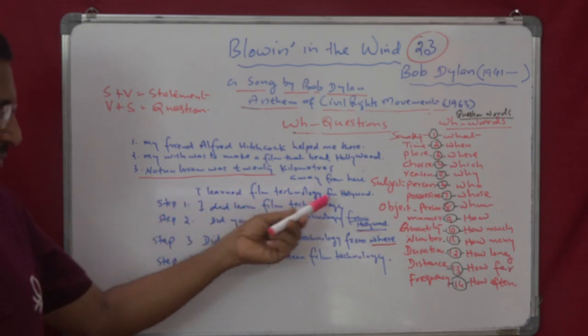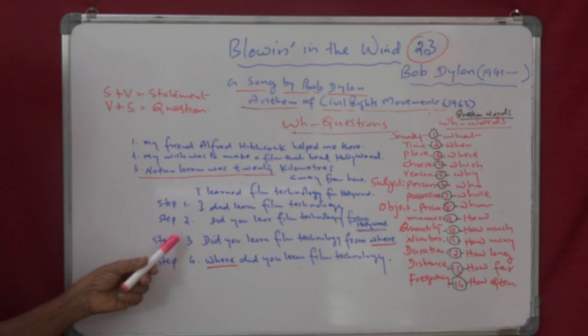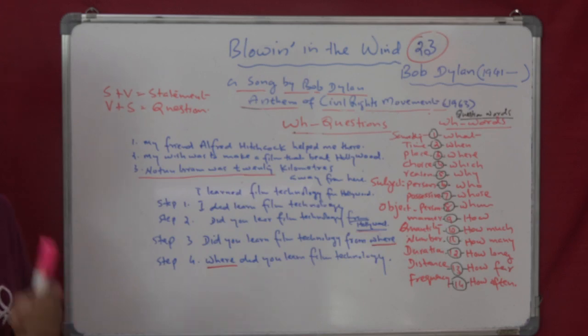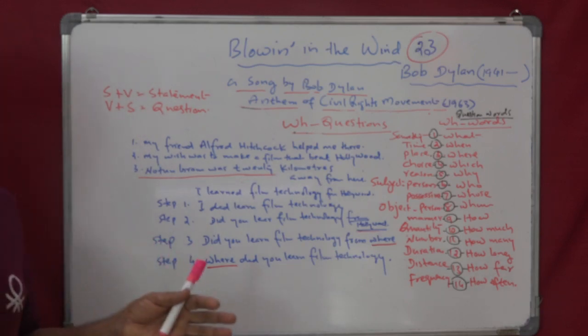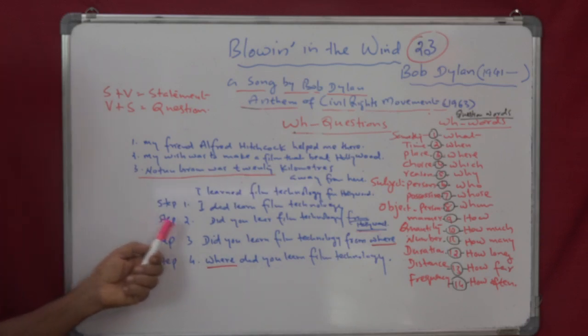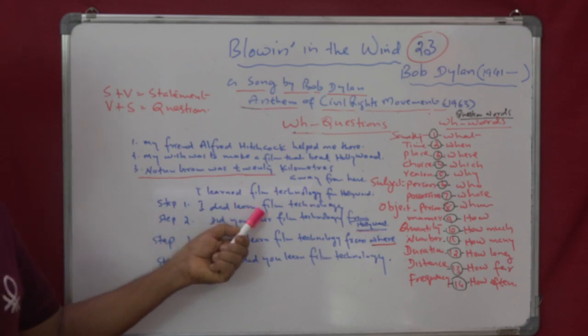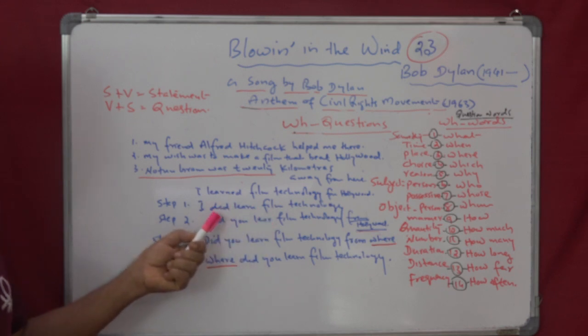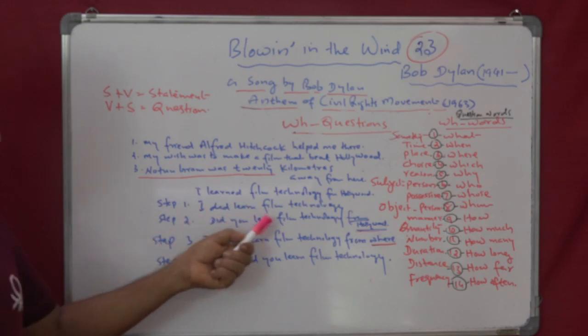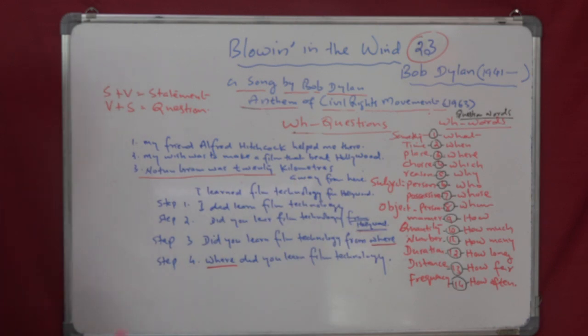I learned film technology from Hollywood. Step 1 is, learn is a main verb. It is past tense. It's a single word verb. So what have you to do? You have to insert do. Since this is past tense, when you insert do, do will become did. And so it will be I did learn, not learned, because the past tense has been taken and added to do. That is how do becomes did. So, I did learn film technology from Hollywood.